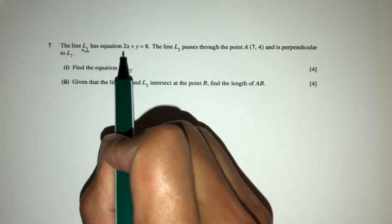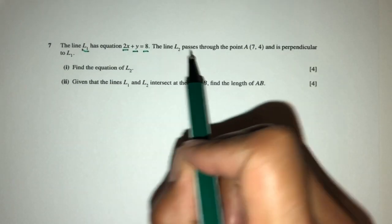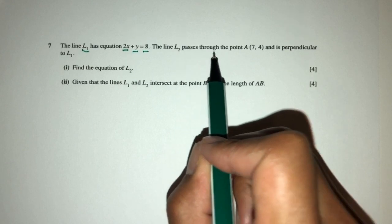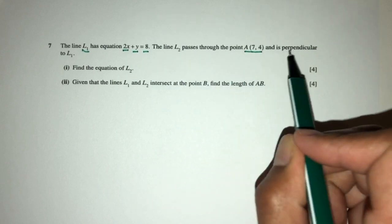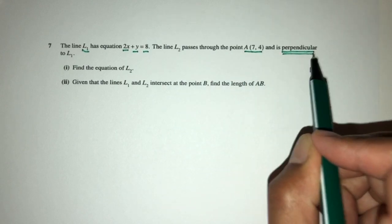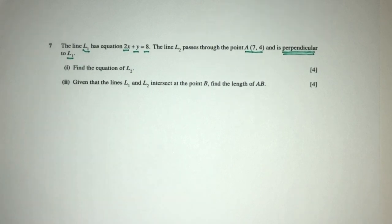So the line L has equation 2x plus y equals 8, and the line L2 passes through the point A and is perpendicular to the line L1. So pretty easy. We have a few information here. Let's see how we can do this.